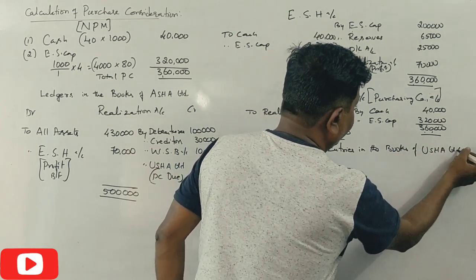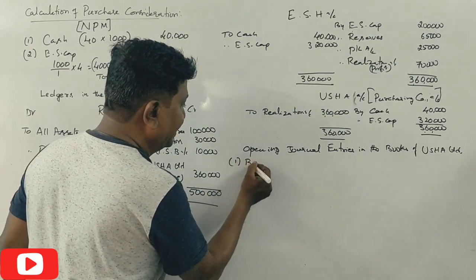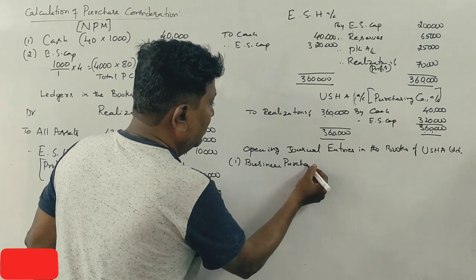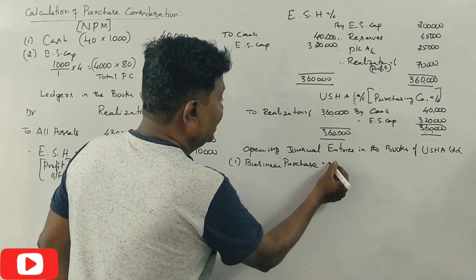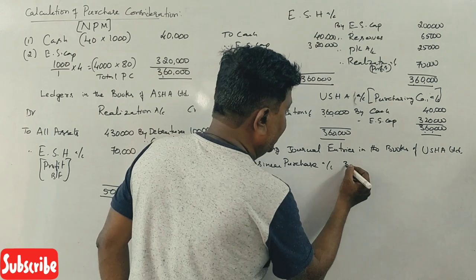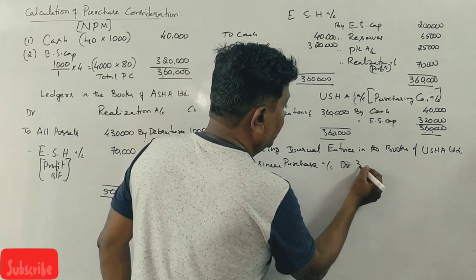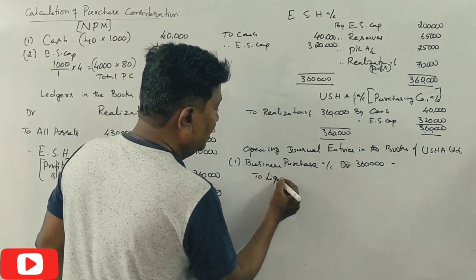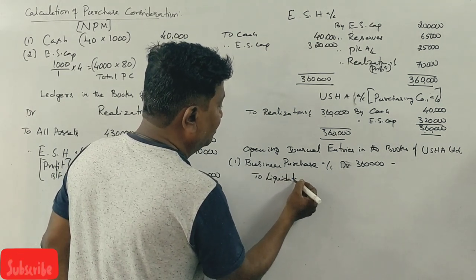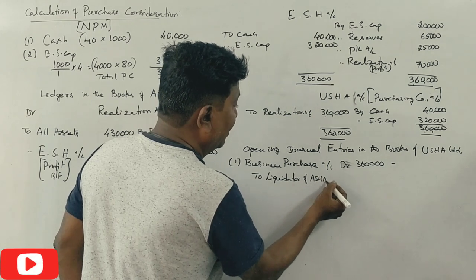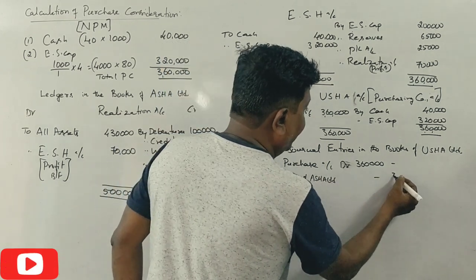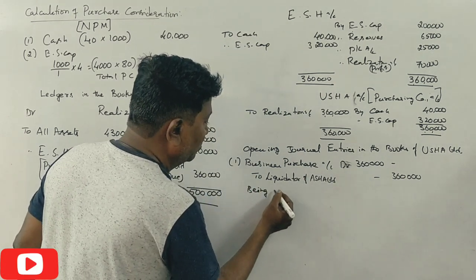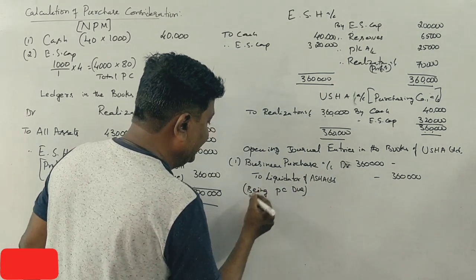The first journal entry is: Business Purchase Account debit. The total PC is Rs.3,60,000. To whom do we credit? To the Liquidator of Asha Limited — Rs.3,60,000. This represents paying the purchase consideration.